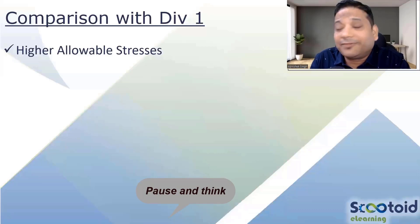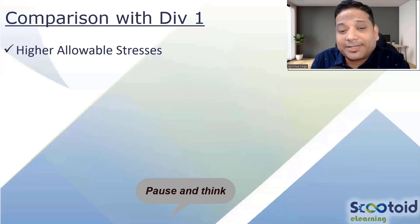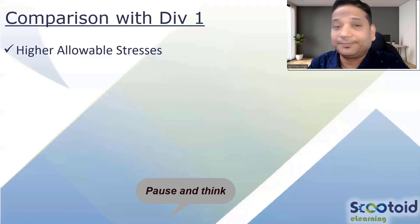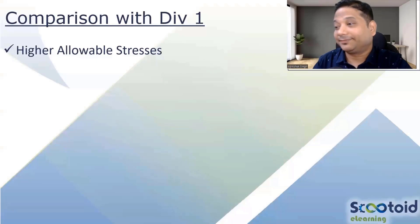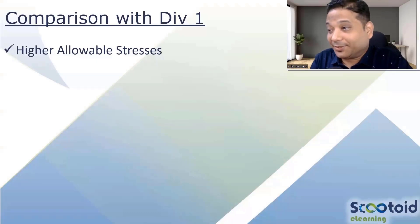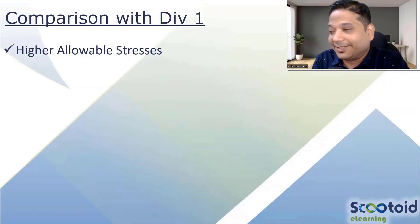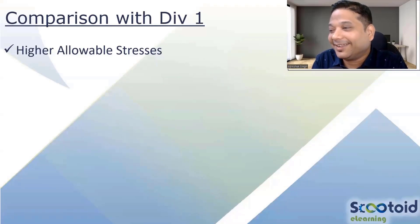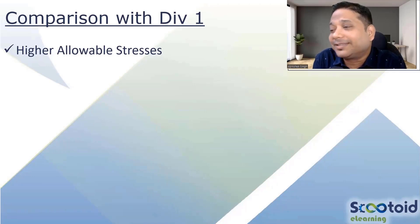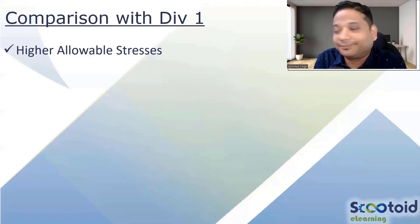Another difference between Division 1 and Division 2 involves failure theory. Division 1 is based on maximum principal stress theory — it considers only the maximum stress and ignores stresses in other directions. It takes the maximum stress and compares it with the allowable, and no other stresses come into picture.